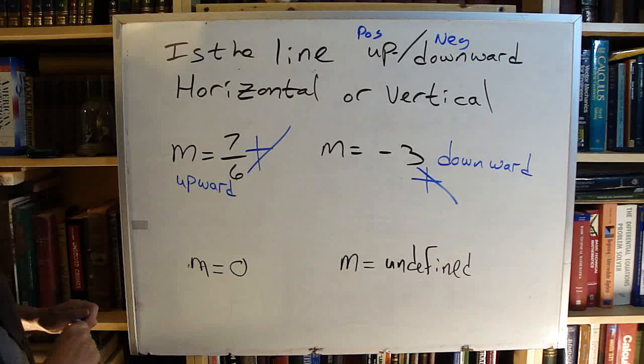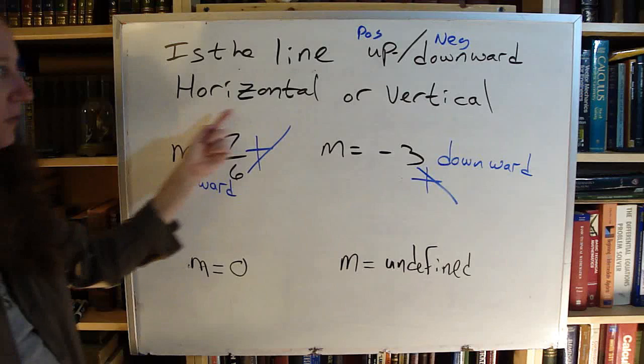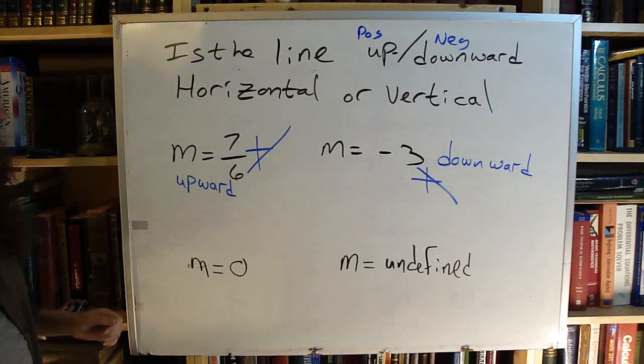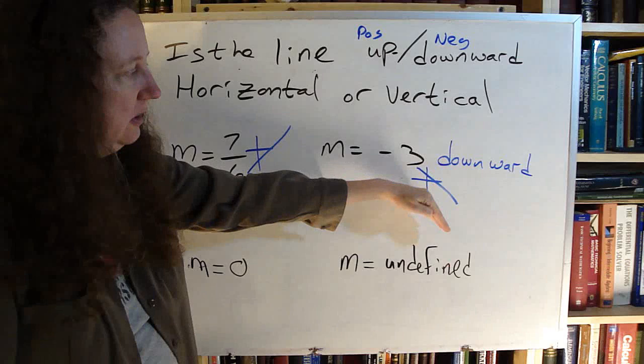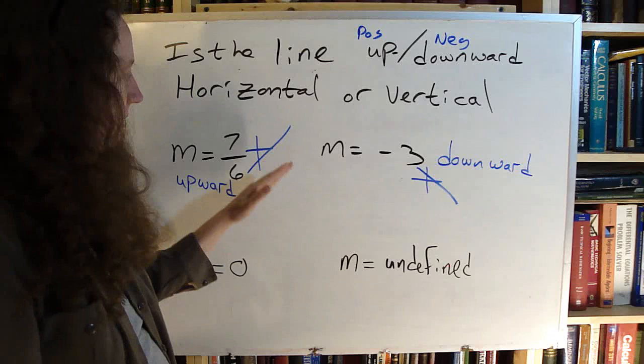Slope is zero. Is that going to be horizontal, or is it going to be vertical? So if this one is up, it's positive. This one is down, it's negative. Zero is between positive and negative, right? So between positive and negative is horizontal.